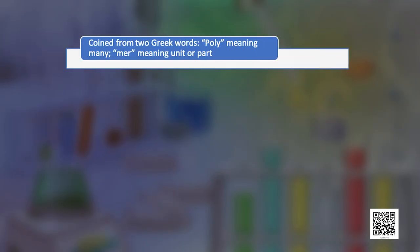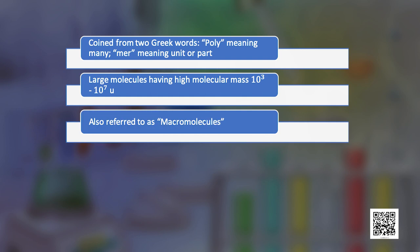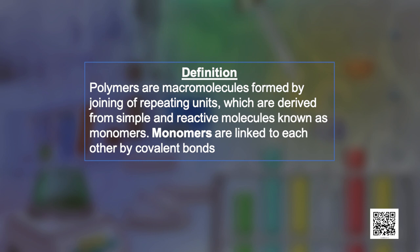We will begin with: what is a polymer? The word polymer is coined from two Greek words — poly means many and mer means unit or part. The term polymer is defined as very large molecules having high molecular mass; these are also referred to as macromolecules. Thus, polymers are macromolecules formed by joining of repeating structural units on a large scale. The repeating structural units are derived from simple and reactive molecules known as monomers.